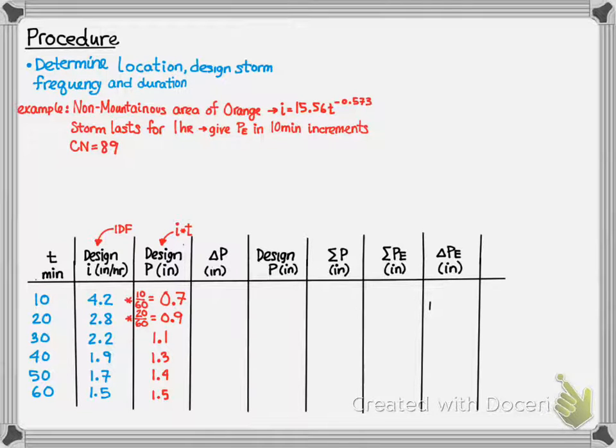Next, we're going to calculate the change in precipitation. So, what you're seeing in column 3 is a cumulative. And so, the way we get the change is the first step would be 0.7 minus 0, because at time 0, there is no rainfall. So, it would give us 0.7 at time 10. At time 20, it would be 0.9 minus 0.7, which is 0.2. At time 30, it would be 1.1 minus 0.9, which would be 0.2, and so on.